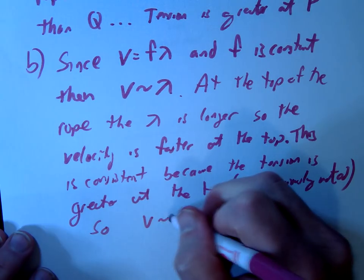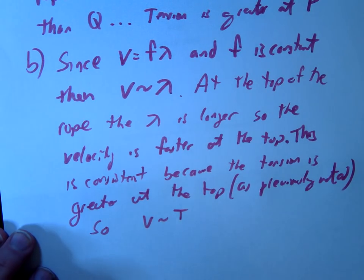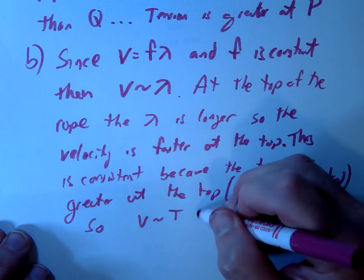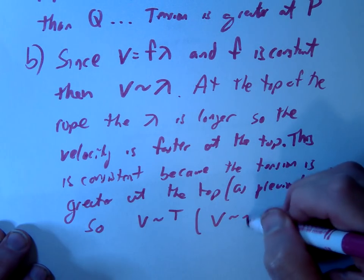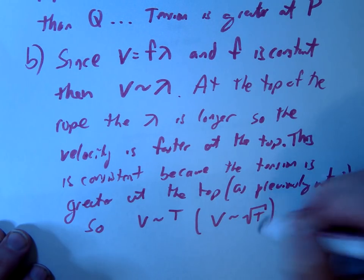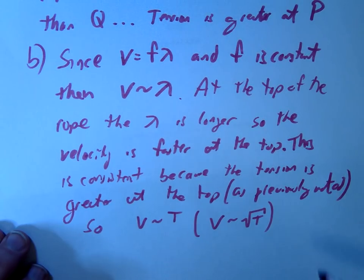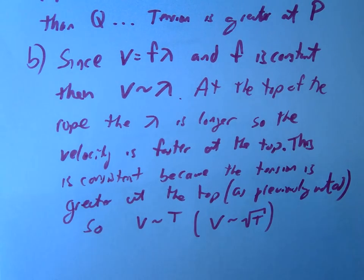So V is proportional to T. And in fact you guys probably know that it's actually proportional to the square root of T if you look at the equation, but you didn't have to know that to kind of figure this problem out. Alright, that's question number five.